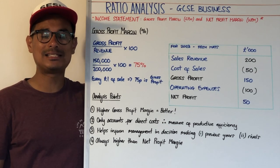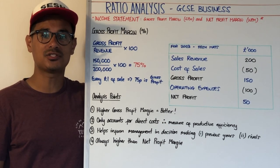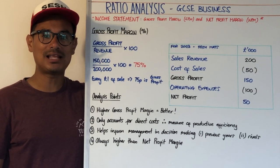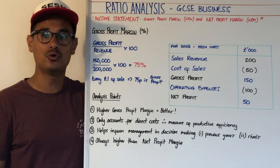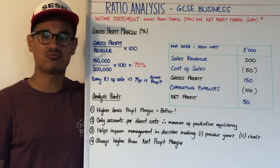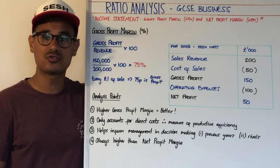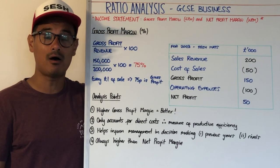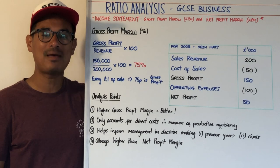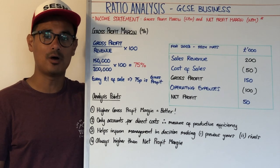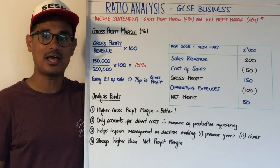Let's have a session on ratio analysis. This is for GCSE business. So ratio analysis — you'll use the income statement to calculate these ratios, and those ratios are gross profit margin, GPM, and net profit margin, NPM.